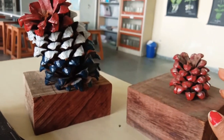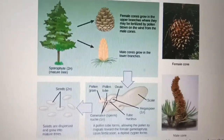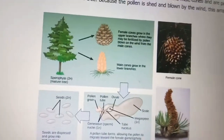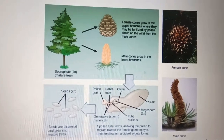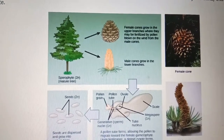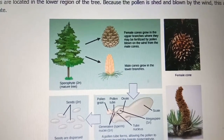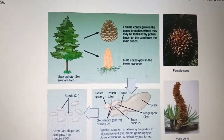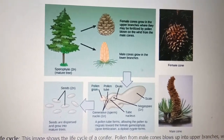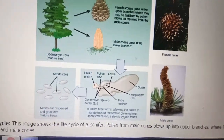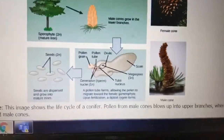This is a structure of a gymnosperm tree. You can see the female cone on the upper branches and the male cone on the lower branches. The female cone grows on the upper branches where it can be easily fertilized by pollen grains that are blown by the wind — this is called wind pollination, or anemophily.